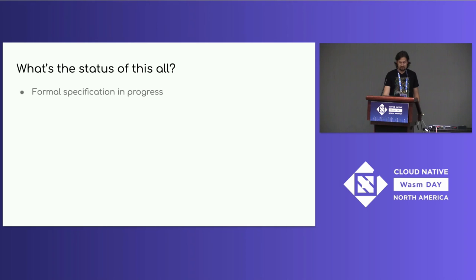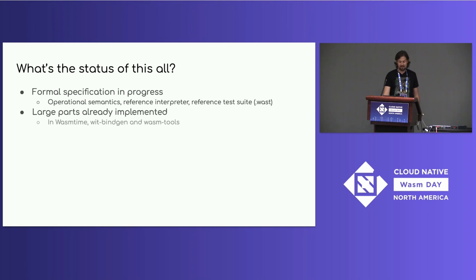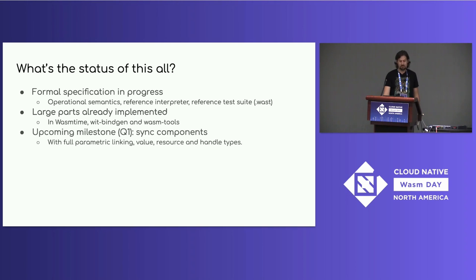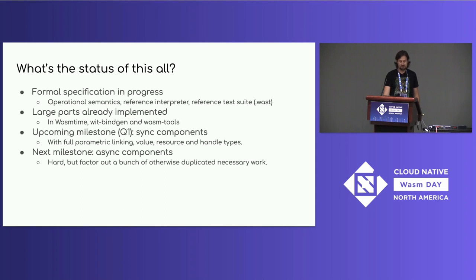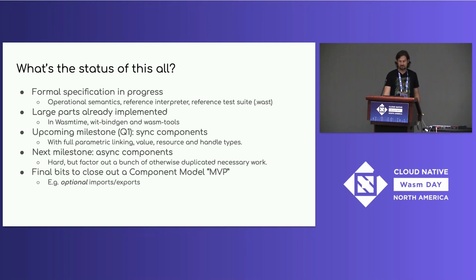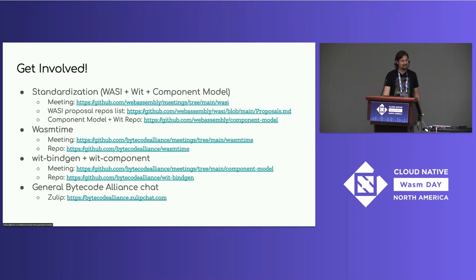What's the status of all this? There's a formal specification in progress with an operational semantics, reference interpreter, and reference test suite. Large parts are already implemented in Wasmtime with Bindgen and Wasm tools. There's an upcoming milestone called sync components with full parametric linking, value, resource, and handle types, aimed for Q1. After that, the big milestone is adding futures and streams — the async support — to the component model, which is going to be hard but will factor out a bunch of otherwise duplicated necessary work. And then some final bits to close out a component model MVP, for example optional imports and exports.